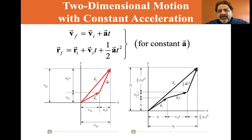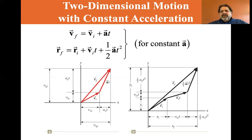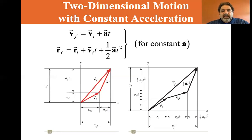Looking at the black vectors, you have an initial position vector r and a velocity times time. Velocity in meters per second times time gives meters. So you have a position vector in meters, plus v initial·t in meters, and then one-half acceleration times t squared — acceleration in meters per second squared times seconds squared — also gives meters. So you're summing meters plus meters plus meters, and that gives you r final. You can see how it's just a vector sum.